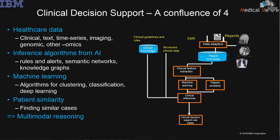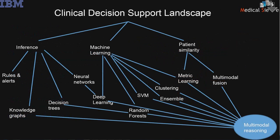Initially, clinical decision support systems worked primarily from structured data, clinical guidelines, and inference engines. Then they moved on to mining data to infer content, and then also onto patient similarity. The top three approaches in terms of dichotomy are inference, machine learning, and patient similarity — something we introduced.